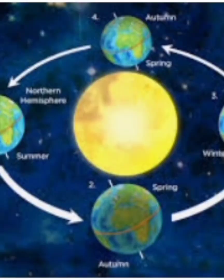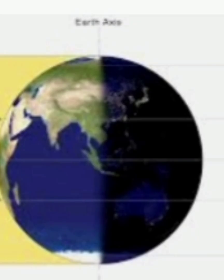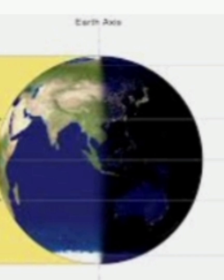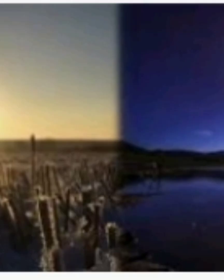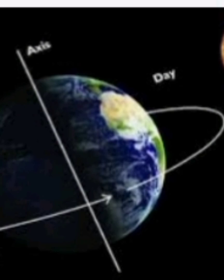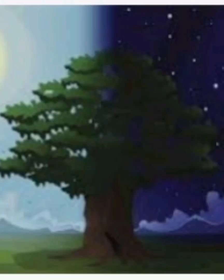Since the Sun is still, because of Earth's rotation, we face the Sun for 12 hours and we call this daytime, and we cannot see the Sun for the next 12 hours, which we call night. So because of the rotation of Earth, we have day and night.